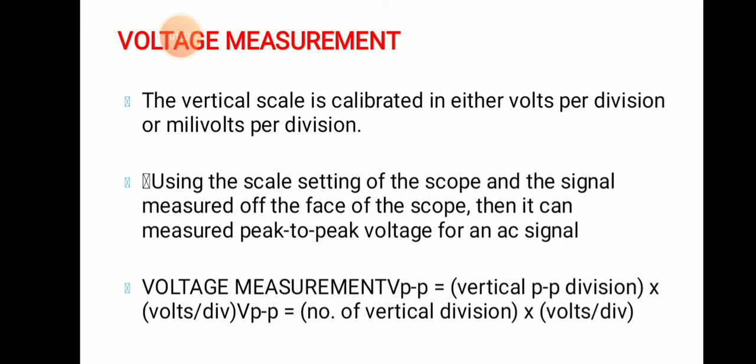While doing the practical, on the CRO there is a button called volts per division. As discussed in the third or fourth video on the front panel of the CRO, you know how to observe the volts per division reading. The vertical scale is calibrated in either volts per division or millivolts per division. When you move that knob, it can be in terms of volts or millivolts. Using this scale setting, you can measure the peak-to-peak voltage for an AC signal.